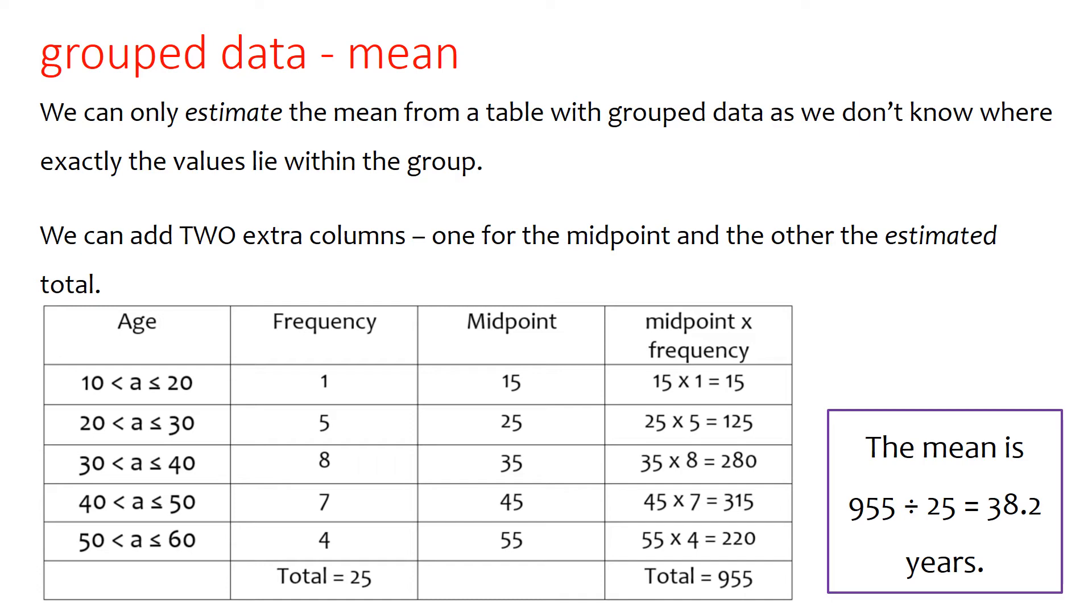If you're not sure how to work out the midpoint, if you can't see it straight away, the fail-proof way of doing it is to add up the lowest and the highest value of the bracket, the 10 and the 20 for example, which gives you 30, and then divide it by 2, and that will give you 15.